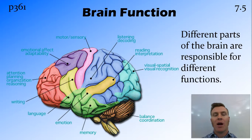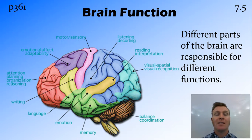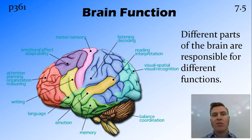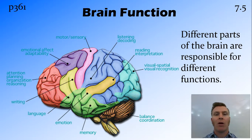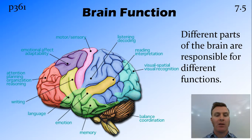Each different part of the brain has a different function, and this does change a little bit from person to person. The brain is such a wonderful organ and so plastic in how it can change, that if you do lose a particular part of your brain, another part can actually take over that function. That's actually how we know a fair bit about brain function — through looking at injuries that damage a particular part of the brain, as well as looking at scans of which bits of the brain are being used when you're actually doing something.